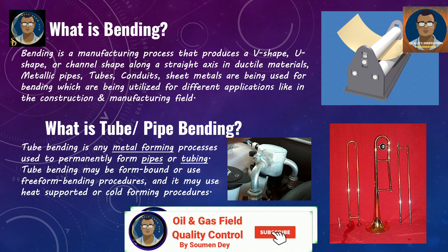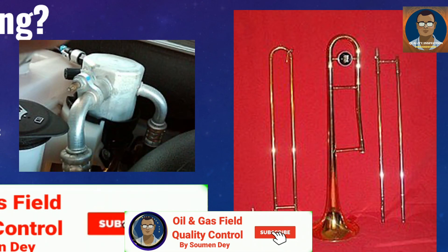What is tube or pipe bending? Tube bending is any metal forming process used to permanently form pipes or tubing. Tube bending may be form-bounded or free-form bending procedures, and it may use heat to support the bending or it may be a cold forming process.